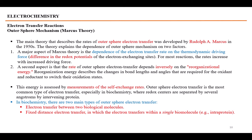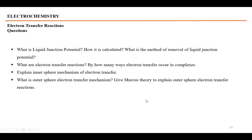If reorganizational energy is lower, the rate of electron transfer is higher; if higher, the rate becomes slower. This energy is assessed by measurement of self-exchange rates. Outer sphere electron transfer is the most common type in biochemistry and biomolecules, because ligands in biomolecules are much larger in size, making inner sphere mechanism impossible. In biochemistry, there are two main types: electron transfer between two biological molecules, and electron transfer within a single molecule from one part to another.